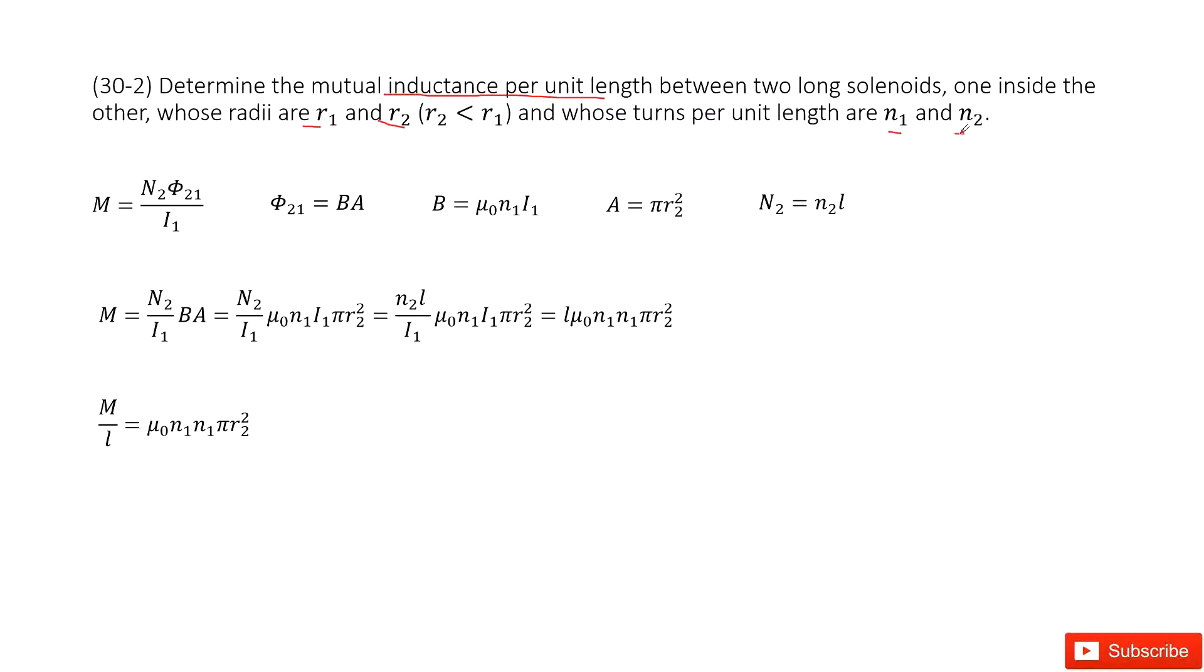So now we can see, we can write down the equations for inductance. In this equation, you can see we have N2, the phi21 is the magnetic flux, and I1.